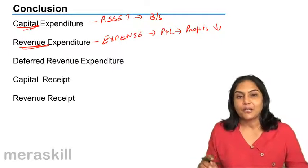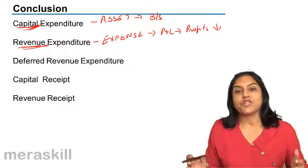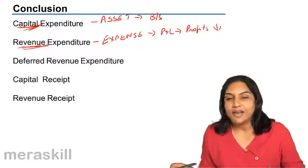Benefit, when it is received over more than one year, it is called capital. Benefit is only in the current year, then it is called revenue.